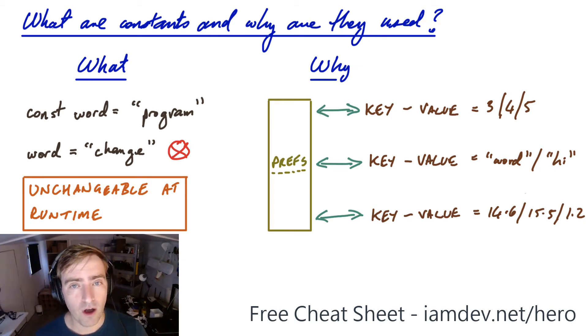You might have a string like word and hi, you might have a double floating point number like 14.6, 15.5, 1.2, whatever it is. Now you'll notice that one of those things is a constant and it isn't the value because the value can change. It's the key that is a constant. So whenever we want to retrieve something from preferences, we give it the key and then it spits out whatever value is associated with that key. So the key never ever changes. That's why you should use a constant, because you have something in your application that never ever changes and is always the same.